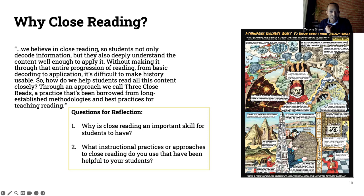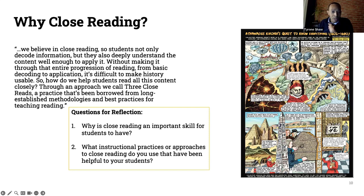For close reading, Steven's strategy is to have students choose what they think are the three most important words on the page and then construct a new sentence that summarizes what they see as the essential idea of that particular page. That forces them to slow down a bit in their reading. And specifically when looking at a graphic novel, it might have them make a quick sketch of part of the page that they think is particularly important.